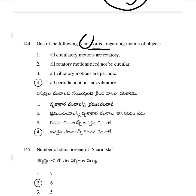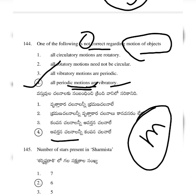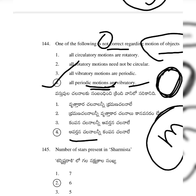One of the following is not correct regarding motion of objects. Uniform motion and types of motions are discussed. All circulatory motions are rotatory — circulatory and rotatory are the same. They have the same properties.